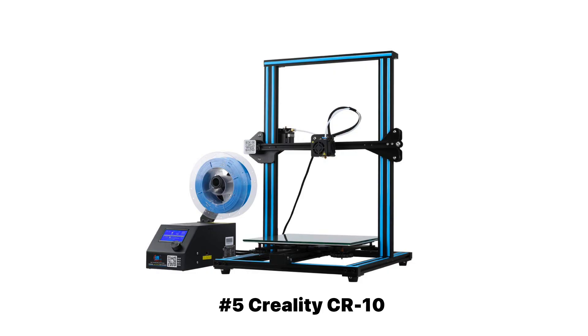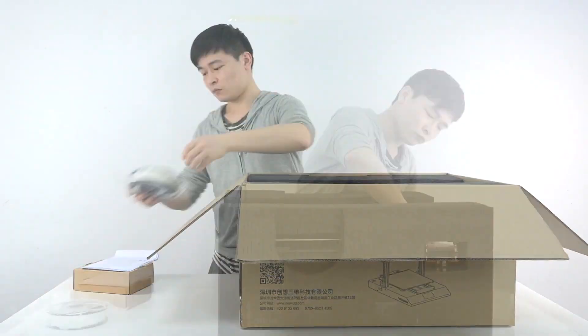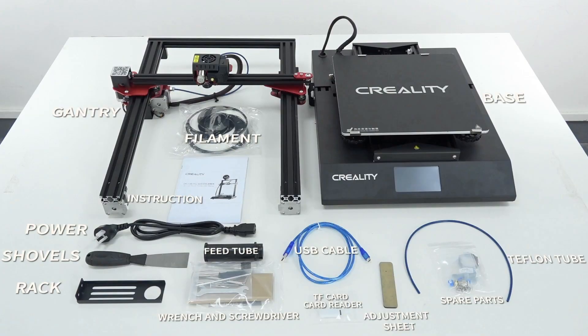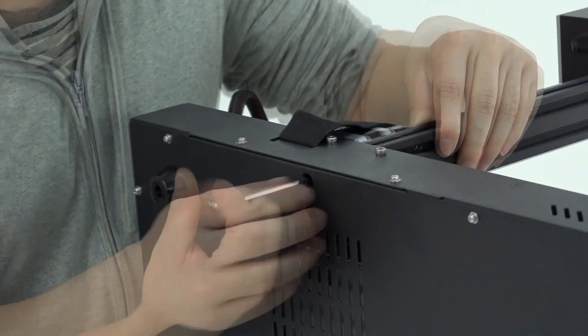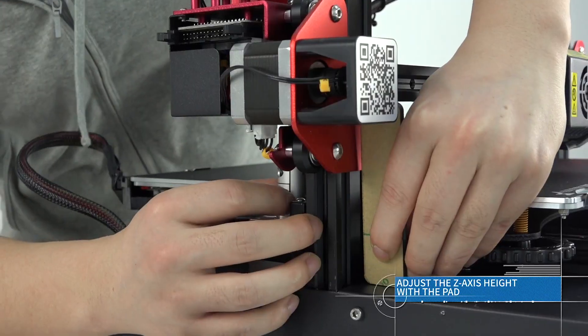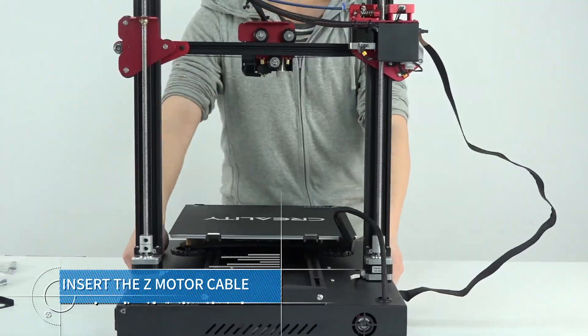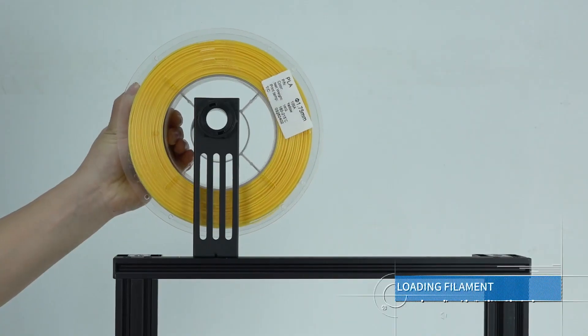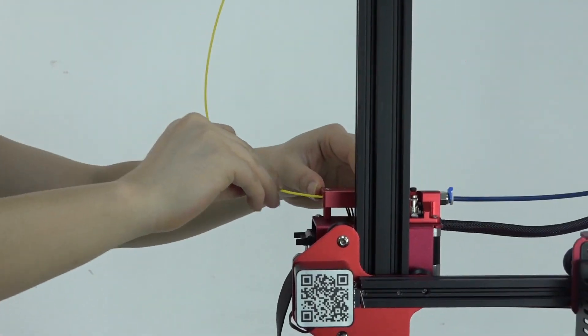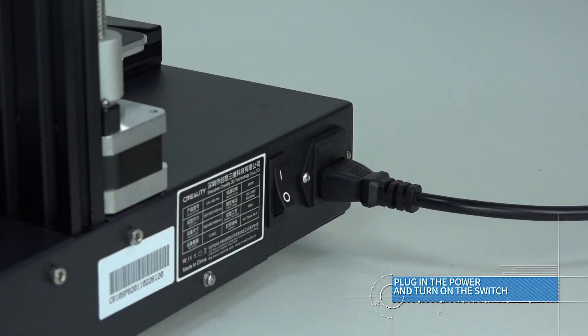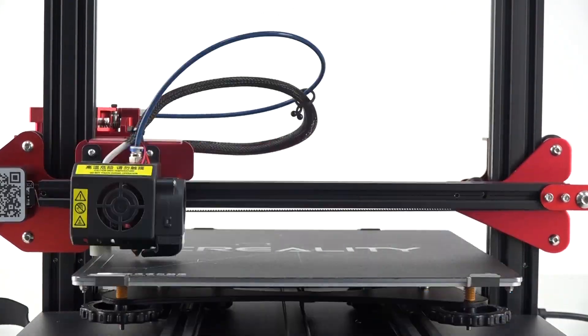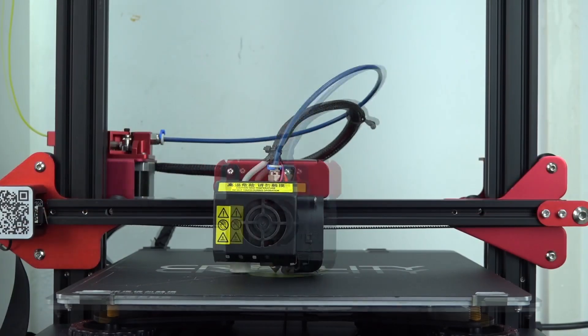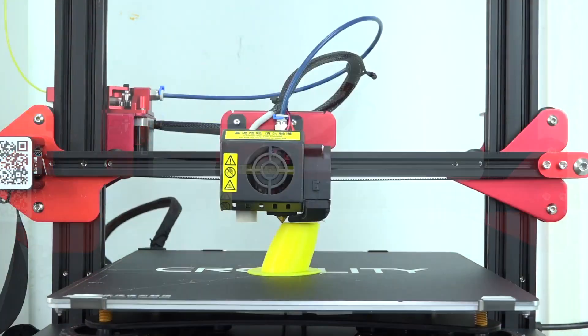And lastly, we have the Creality CR10. This is a great, budget, large-format 3D printer. The Creality CR10 is easier to assemble than the Creality Ender 3, and the build volume is much larger. You can find this 3D printer for around $300 to $400. This 3D printer, however, may require a lot of tinkering, and you may struggle with bed leveling if you're a beginner. But if you don't mind tinkering and you want a bigger build volume, then this is a great 3D printer for you.